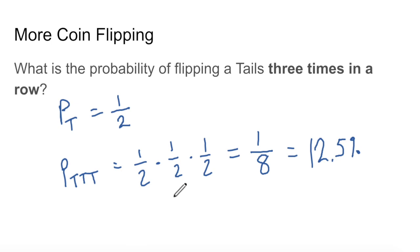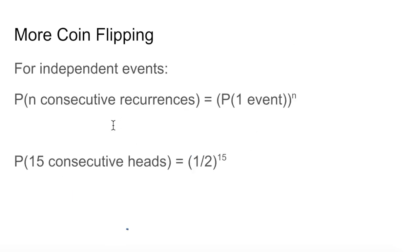We simply multiply the probability of each event to get the probability of all three events happening. So if we were to flip a coin 15 times, the probability of 15 consecutive heads would be very small. The probability of one head is one-half, so we would just take one-half raised to the 15th power — just like we took one-half to the third power, which is one-half times one-half times one-half. In this case, we multiply one-half times itself 15 times. It's going to be a very small number, but that's how we get it: raise one-half to the 15th power.